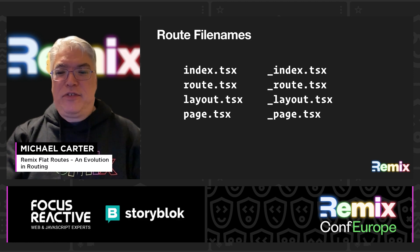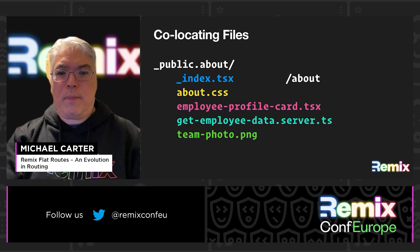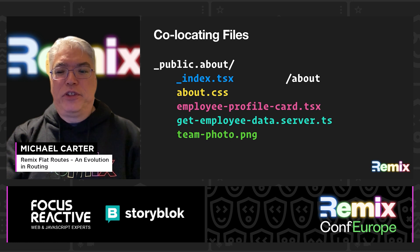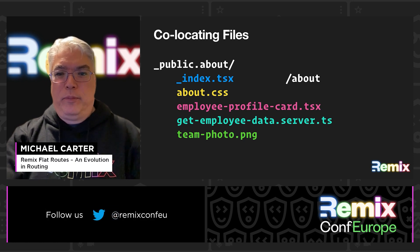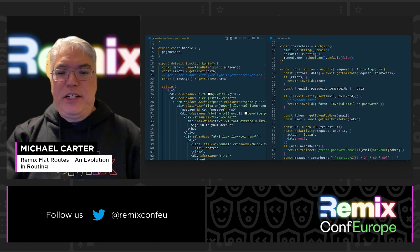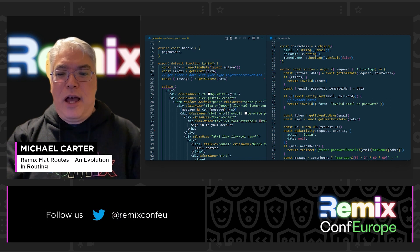Remix supports multiple aliases for the route file: you can use index, route, layout, or page, as well as add the underscore prefix. This helps sort route and layout files to the top of the file list when co-locating files. One of the main benefits of the FlatFolders convention is support for co-location — co-locating support files like CSS, components, server files, images, etc. Your route file can then import these assets as relative imports. I've also been experimenting with splitting my route file into a route and a route server file, since I use Zod for validation and the package is heavy. By only defining and using the Zod schema in the server file, I guarantee that Zod does not end up in the client bundle.